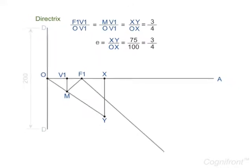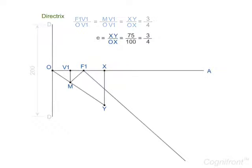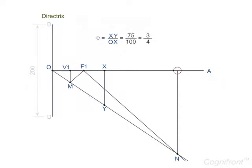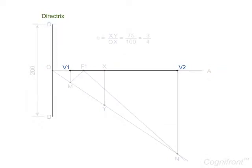From focus F1 draw another line at 45 degrees to meet the extended line OY at point N. From N draw a line perpendicular to meet the axis OA at V2. V2 is the second vertex of the ellipse. V1V2 is the major axis of the ellipse.